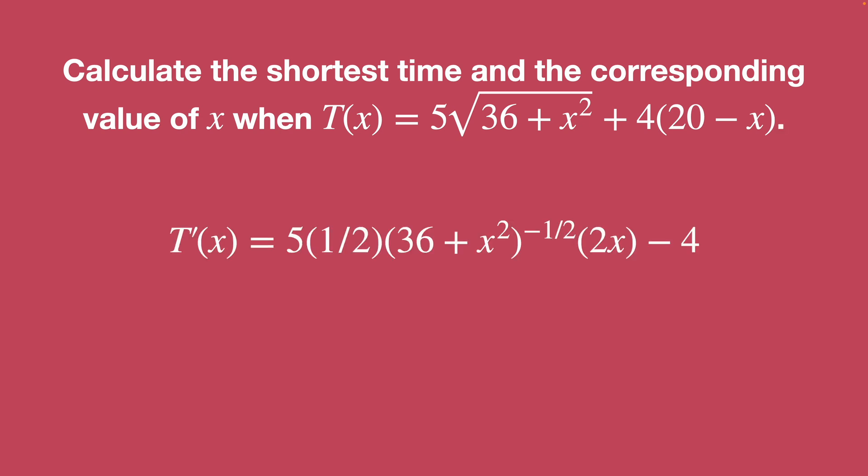And you'll notice this is just some light chain rule stuff. Because our one half in front comes from the root and the negative one half is obviously from one half minus one. And then lastly here, our 2X is from our X squared and our four is from our negative 4X.